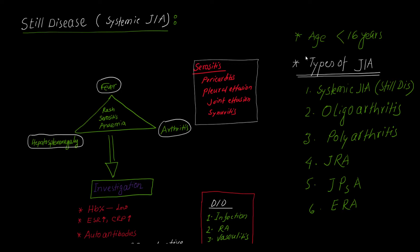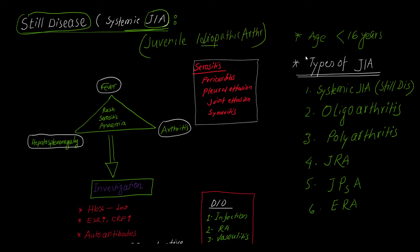This video is on Systemic Juvenile Idiopathic Arthritis, called Systemic JIA, also known as Still's disease. Idiopathic means the cause is not known, and juvenile means before the age of 16 years. When arthritis of unknown cause occurs before the age of 16, it is called Juvenile Idiopathic Arthritis, and there are several types.